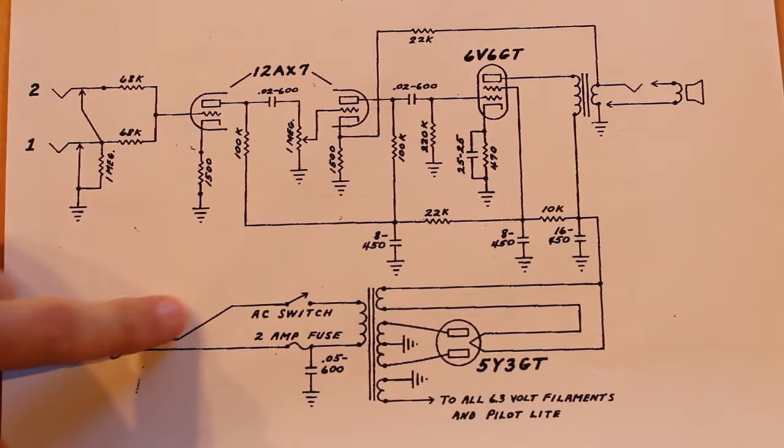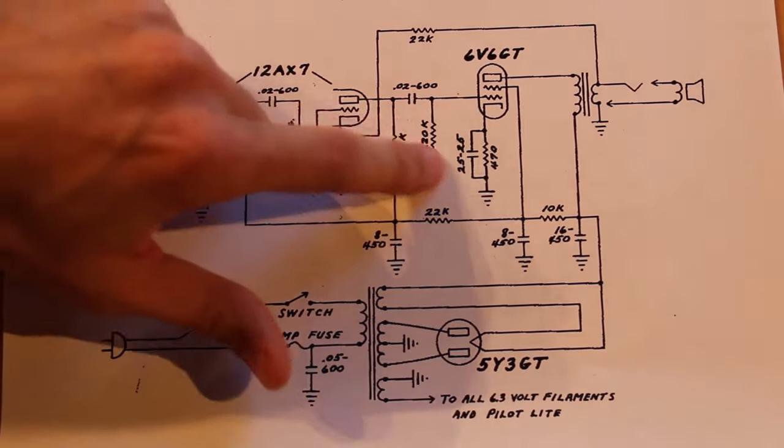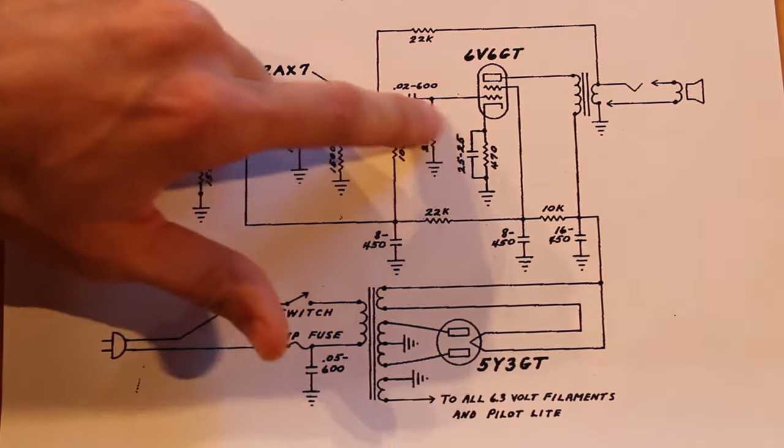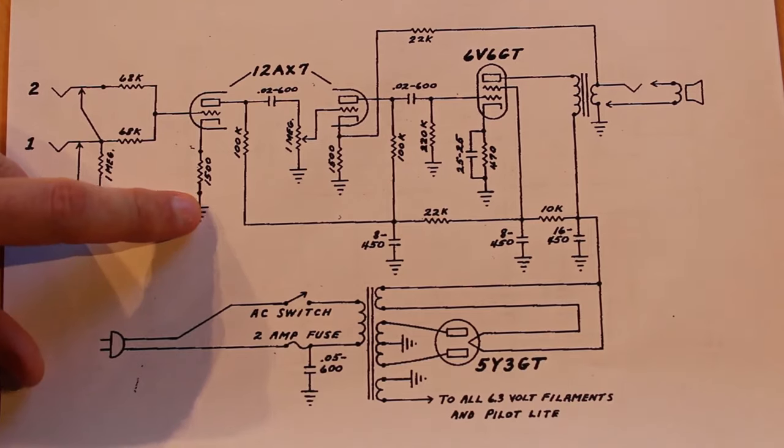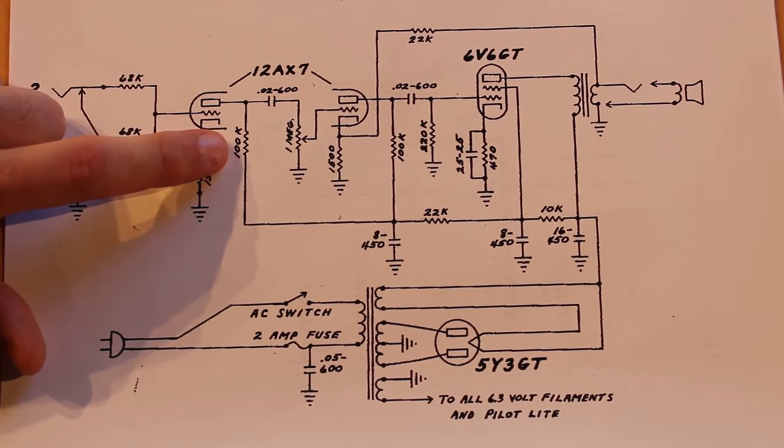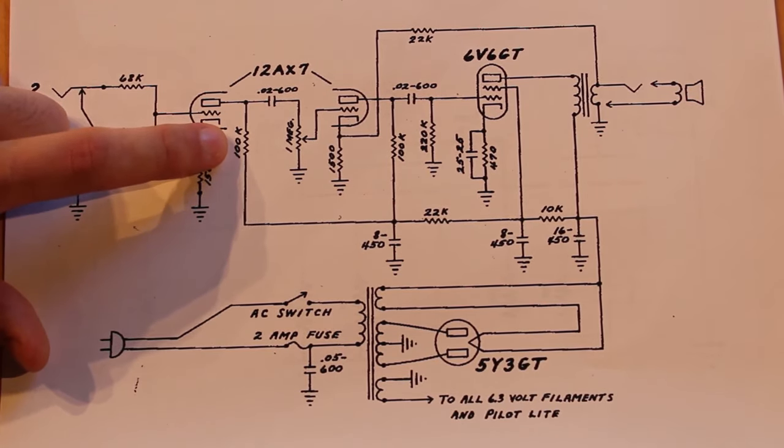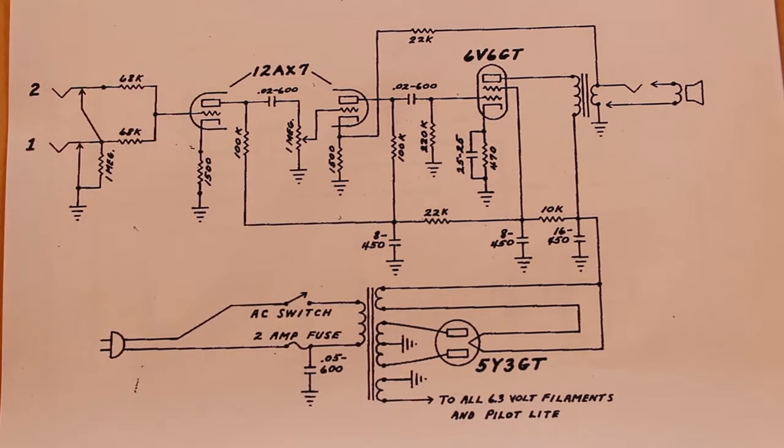And on top of that, all of these resistor and capacitor values, I don't think are going to work for the voltages we're running at. A 100,000 ohm plate resistor at 24 volts is going to give us practically nothing in the way of amplification. So we need to drop that down to say 10,000 ohms like we normally do. So I went through this and had a bit of a think and I redrew the schematic.